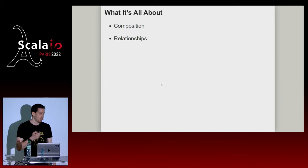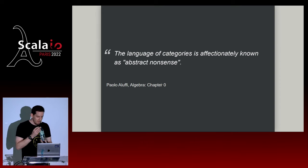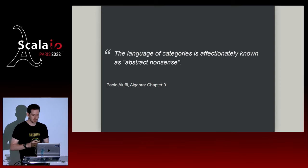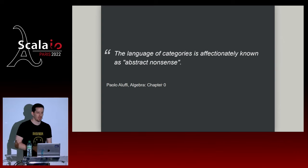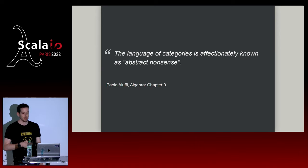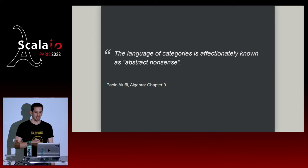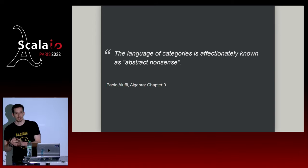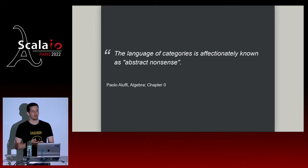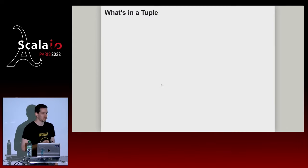More importantly for this talk, category theory is about relationships. In the definition of objects, I didn't specify anything about the objects themselves — I didn't say what they contain or their structure. All I care about are the arrows going in and out. Basically, the only thing that really defines an object is how it relates to other things. Thinking about how things relate is exactly what we need to start exploring the idea space.